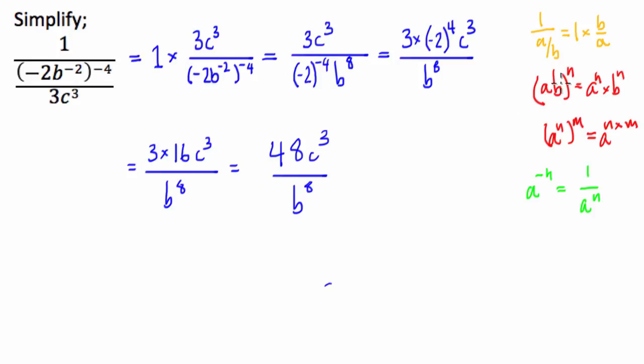What we then did is we used the distributive law as well as the fact that when we multiply indices inside brackets, we have to multiply the indices as well. So what we did then is we multiplied the negative 4 into our bracket.